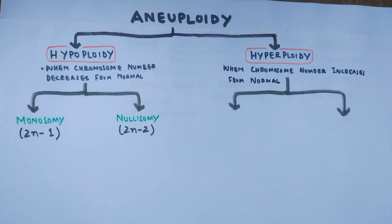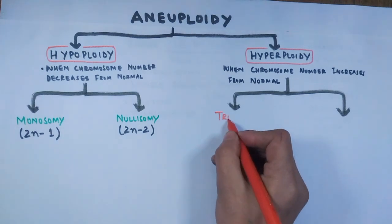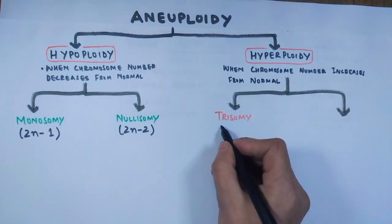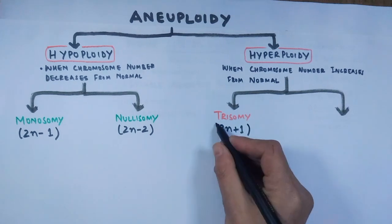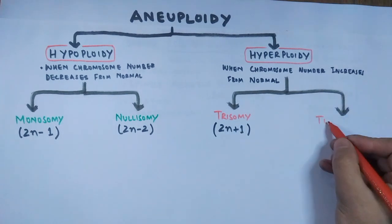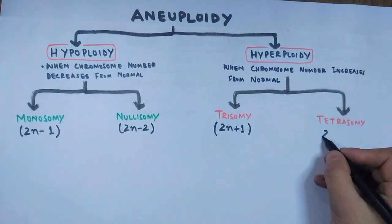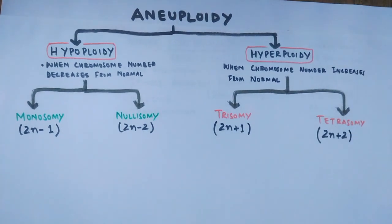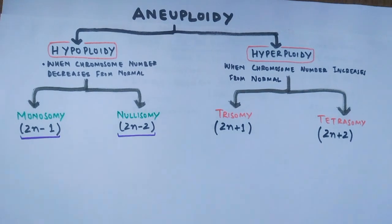Hyperploidy is classified into trisomy, having the 2n+1 condition, and tetrasomy, having the 2n+2 condition.